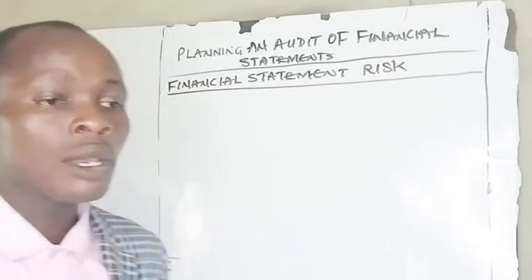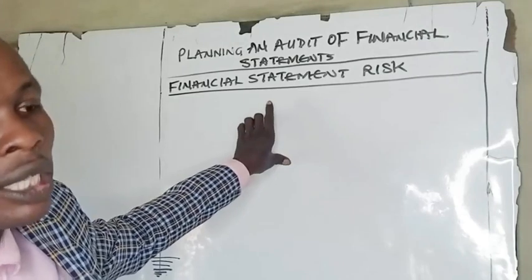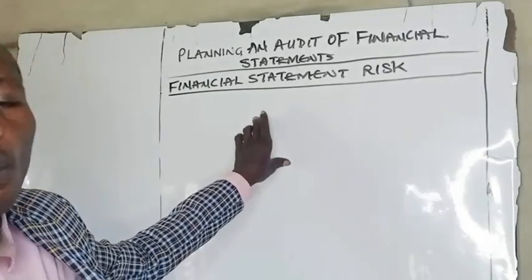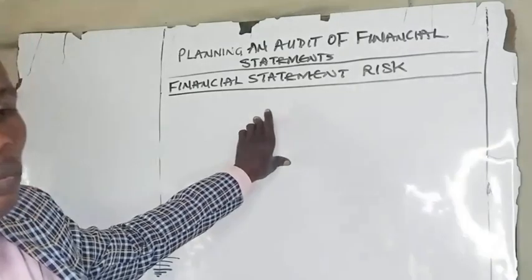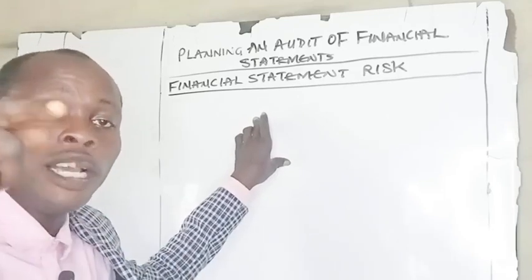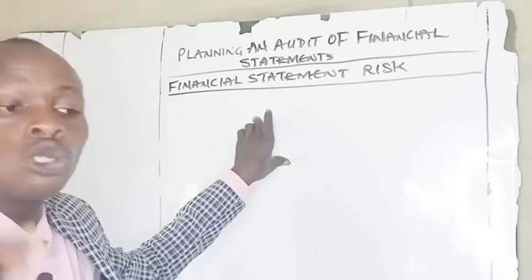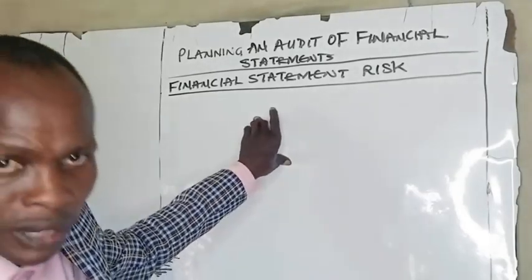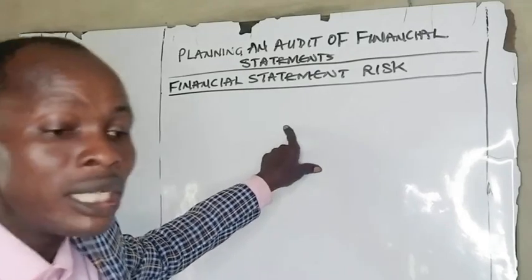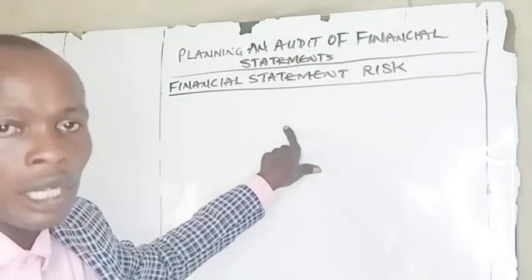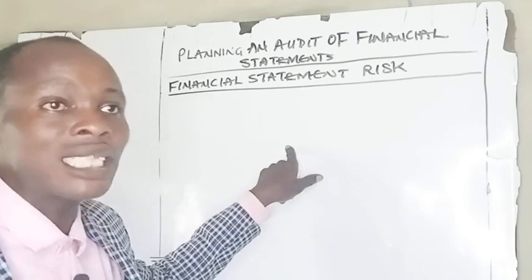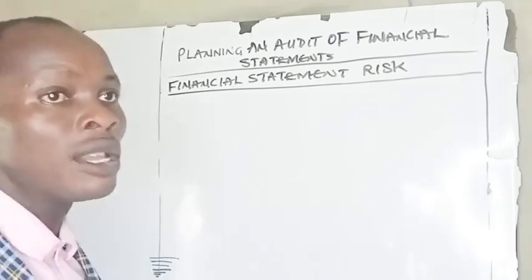What do we mean by financial statement risk? Financial statement risk is the risk that the financial statements will not give a true and fair view due to misstatements or omissions. In other words, it is the risk that the financial statements are incorrect.